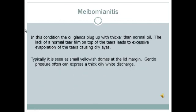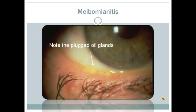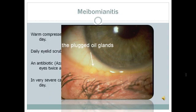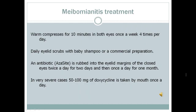A third cause of OSD is meibomianitis. In this condition, the oil glands plug up with thicker than normal oil. The lack of a normal tear film on top of the tears leads to excessive evaporation of tears, causing dry eyes. Typically it is seen as small yellowish domes at the lid margin. Gentle pressure often can express a thick, oily, white discharge. Note the plugged oil glands on the patient's eyelid.